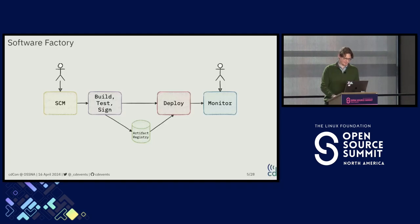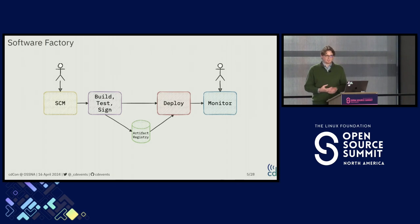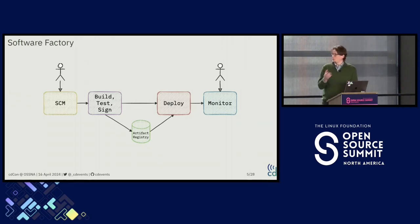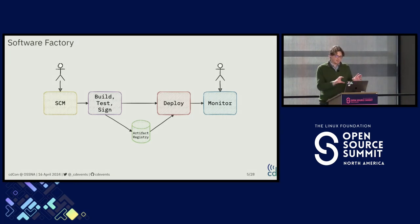Let's start with the software factory. This is CityCon so you're probably familiar with building software in some way. This is a very simple case where you start from SCM — software configuration management — host your source code there, build it, push some artifacts into an artifact registry, deploy, and then monitor the result. And already for this very simple case, you will need a combination of tools to work together to achieve this.